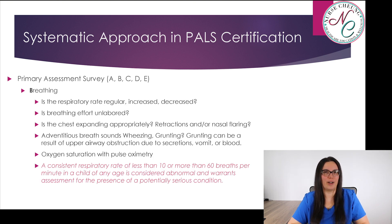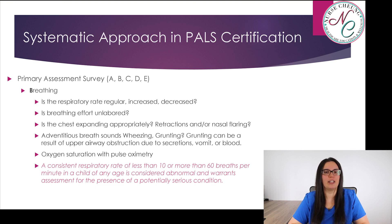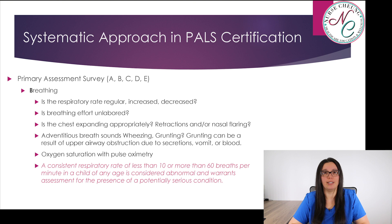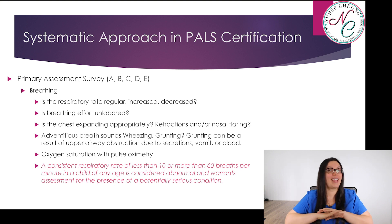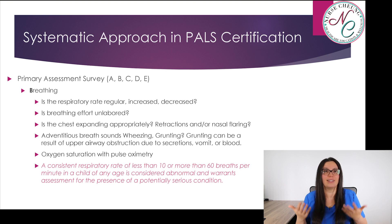Next we move on to breathing in our primary survey. Is the respiratory rate regular, increased, or decreased? Is the breathing effort unlabored? Is the chest expansion appropriate, or do you note retractions and nasal flaring? Adventitious breath sounds such as wheezing or grunting — grunting can be a result of upper airway obstructions due to secretions, vomit, or even blood. Oxygen saturation with pulse oximetry is noted and needed. A consistent respiratory rate of less than 10 or more than 60 per minute in a child of any age is considered abnormal and warrants assessment for the presence of a potential serious condition.